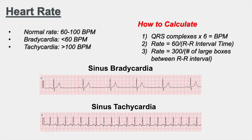Applying the same method to the sinus tachycardia strip, we count twenty QRS complexes. Twenty times six is 120 beats per minute — that is tachycardia.